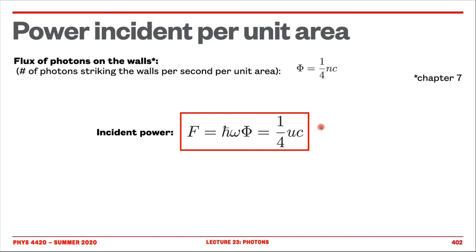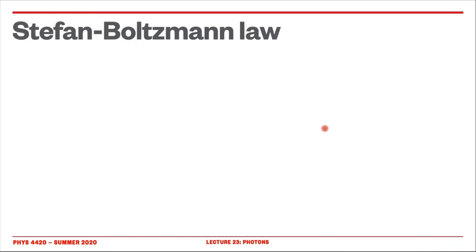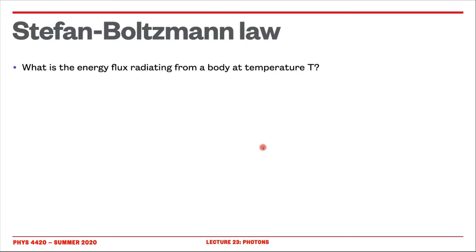So we have the flux, we have the internal energy, we have the pressure. And in fact, we can already go to a very important result, which is the Stefan-Boltzmann law. The question that the Stefan-Boltzmann law answers is: what is the energy flux radiating from a body at temperature T? We've already calculated what's the flux of energy incident in this cavity that we discussed before. But the question is, what is the energy flux radiating from a body that has temperature T?